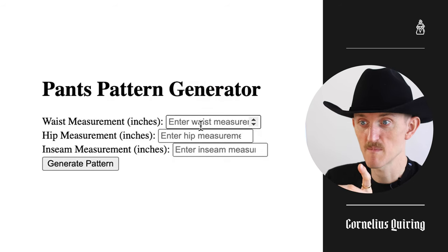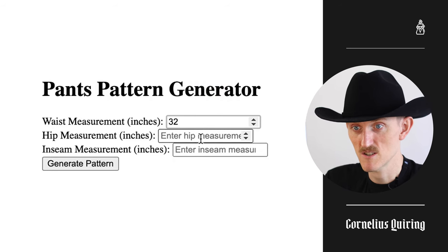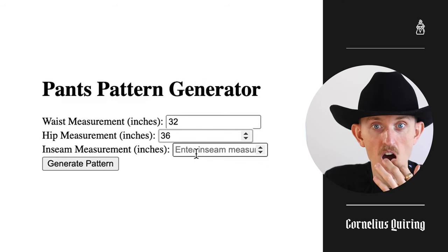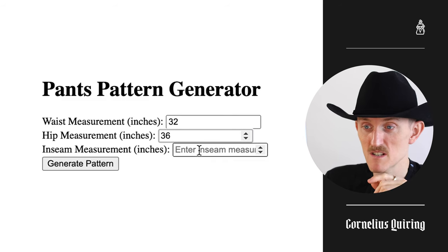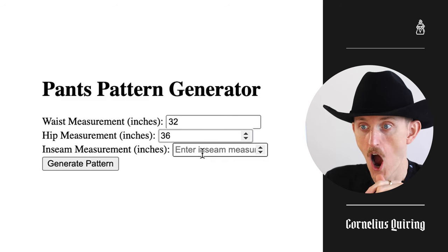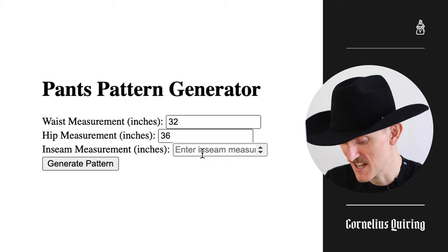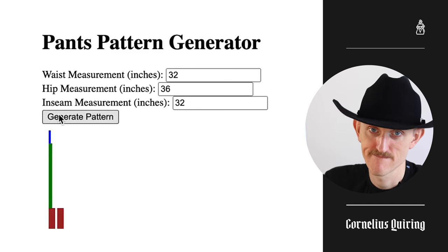Let's run the program. Waist measurement — about 32. Hip measurement — that's about 36. Inseam measurement — yo, it knows inseams? Those are actually kind of the basic measurements we need to make pants. What's my inseam? I think it was like 32 as well. Generate. At this point, the AI bots had enough of me slagging them off and cut my mic, as evidenced right there.